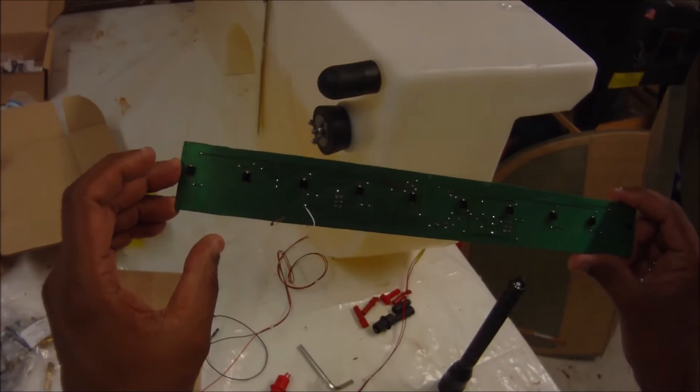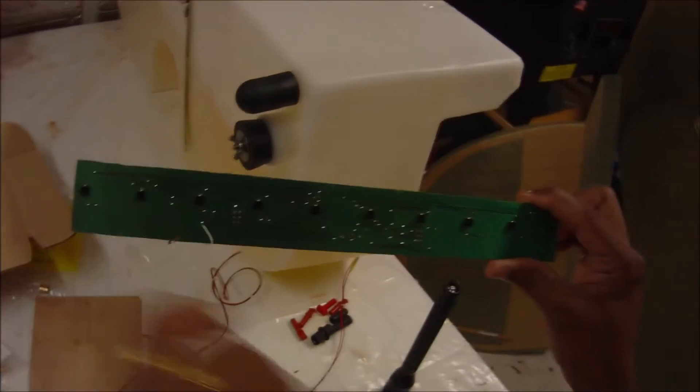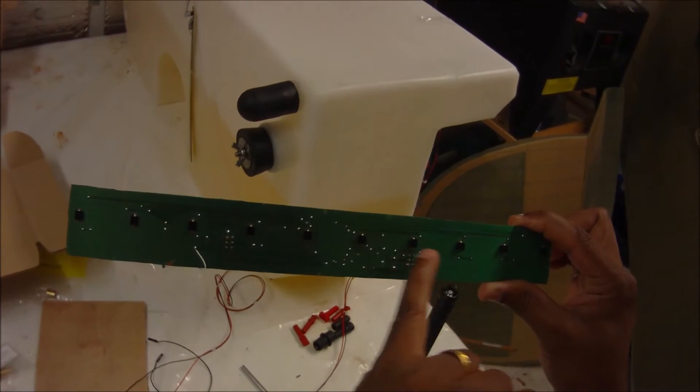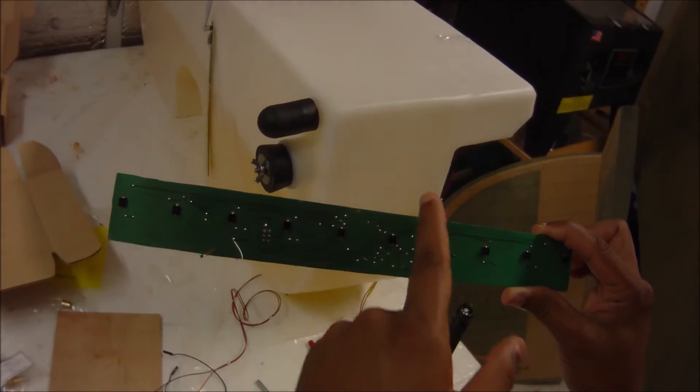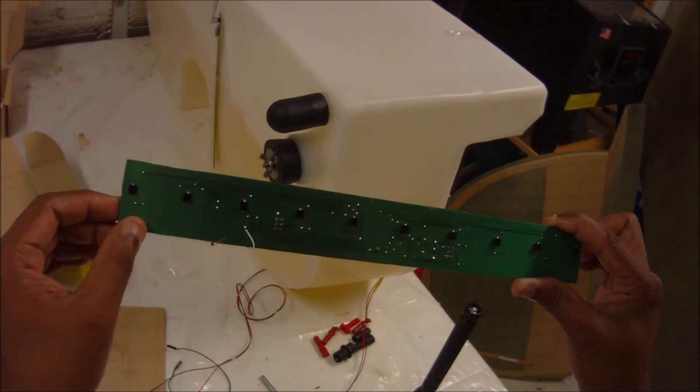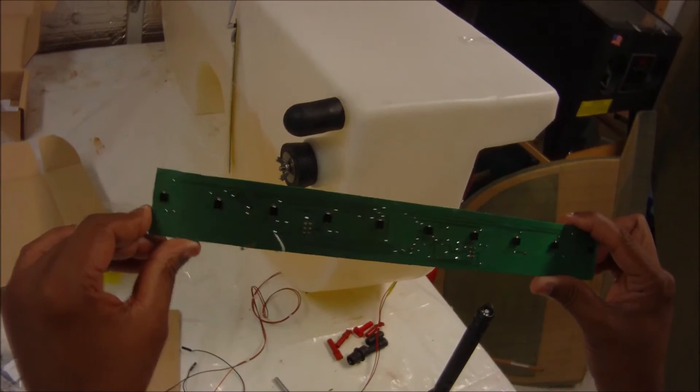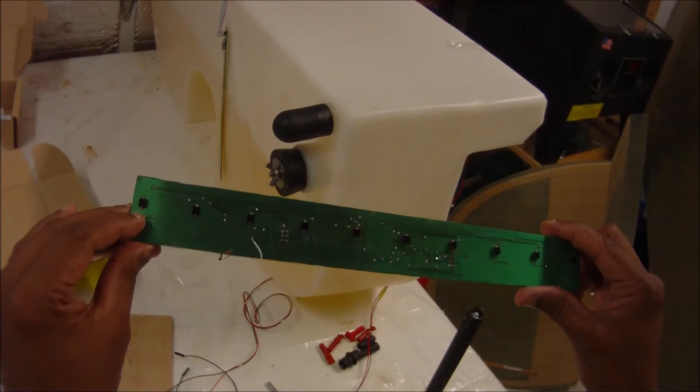So this is the detector board. It has ten photodetectors, one inch apart, so that it can detect the fluid level when it falls between any of these two detectors. But the main function of this board is really on this side.